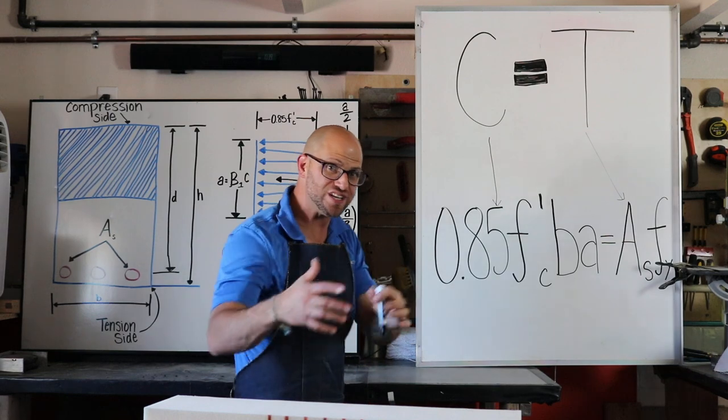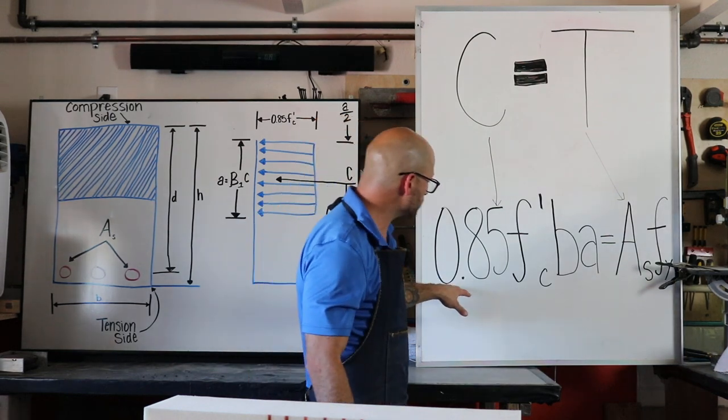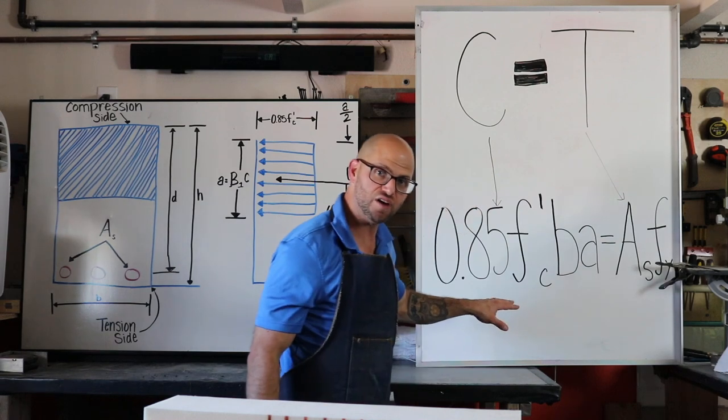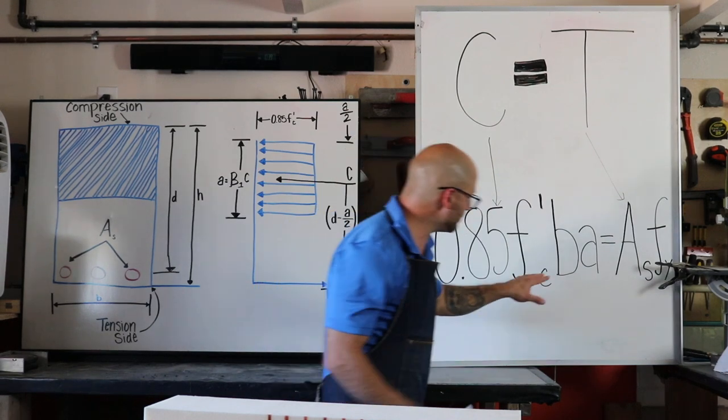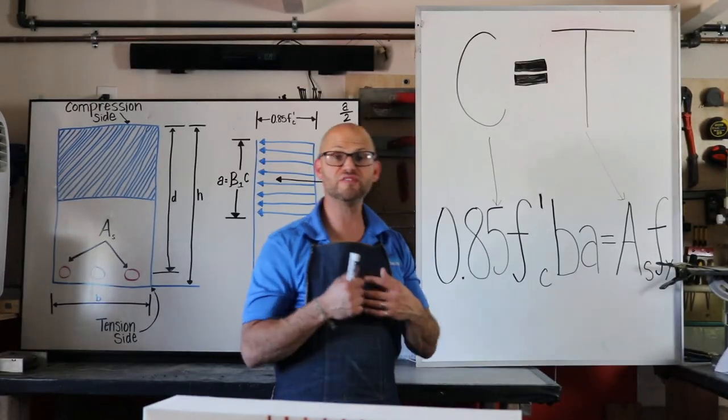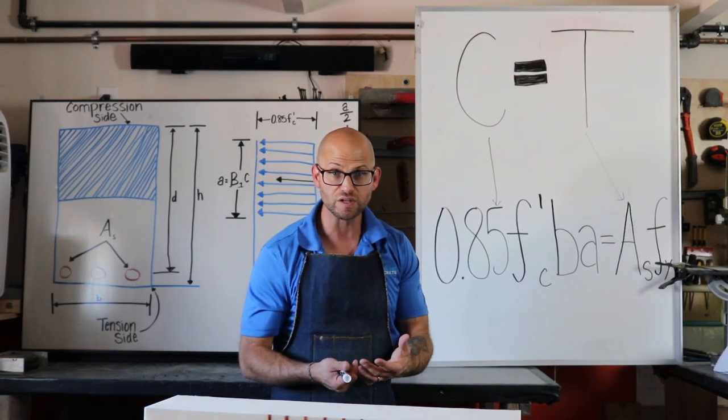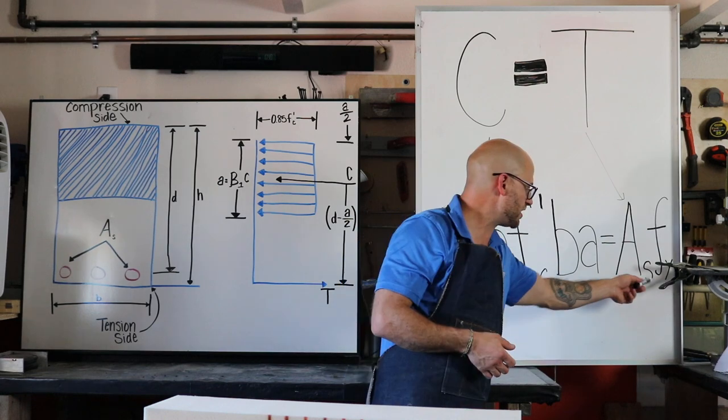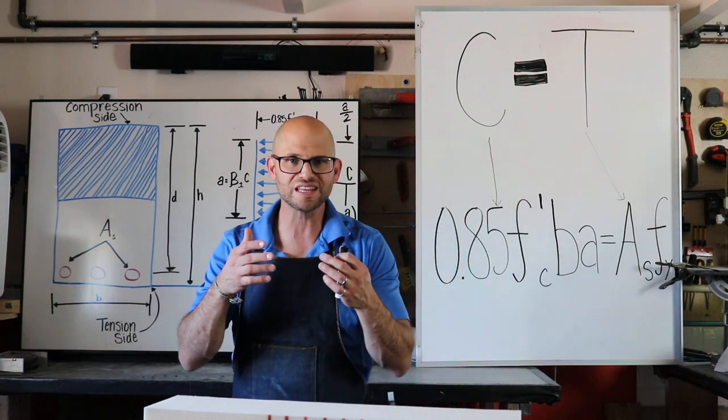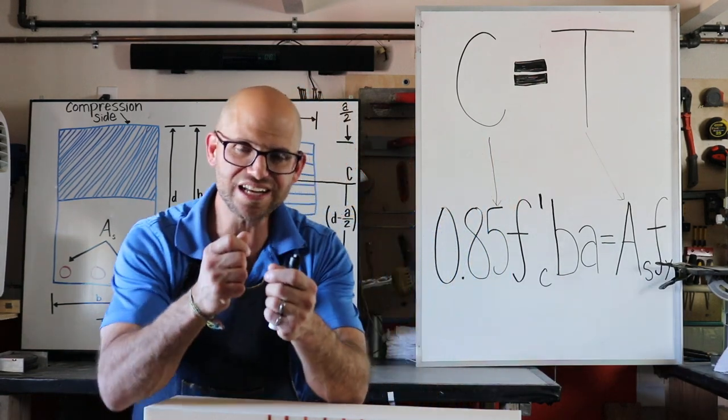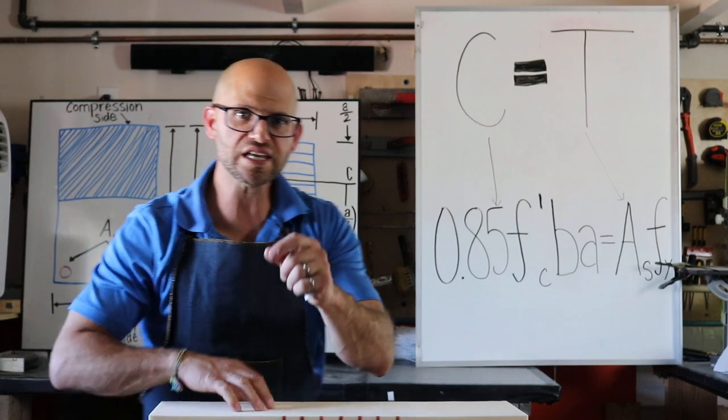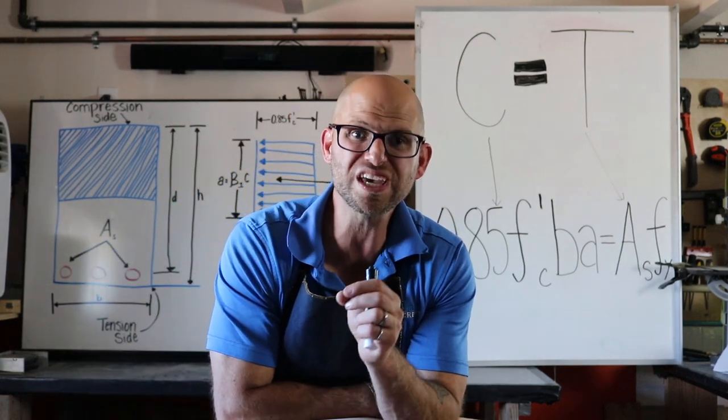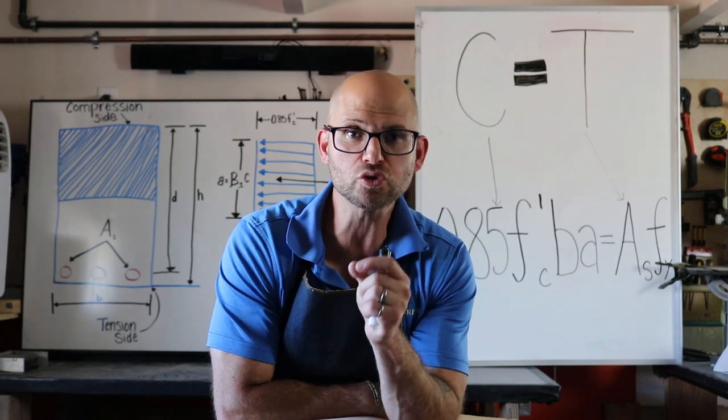We have this correction factor times the strength of our concrete and then the geometry of that compression zone. Now we set that equal to our tension zone: area of steel times the yield strength. By setting those equal, we can either design our concrete or we can determine how much load an existing beam can hold.